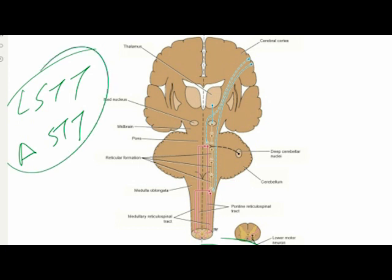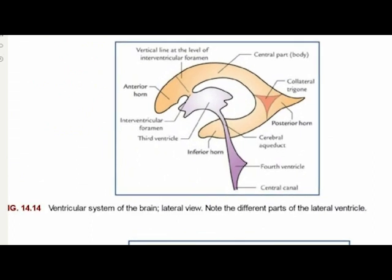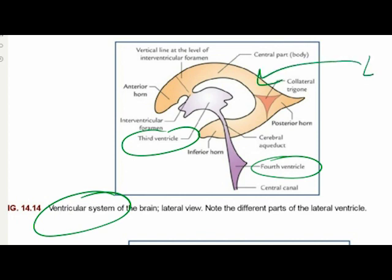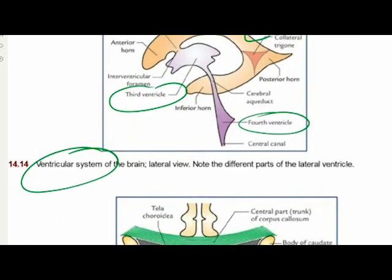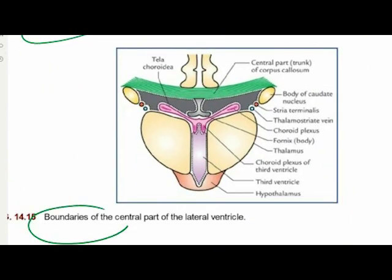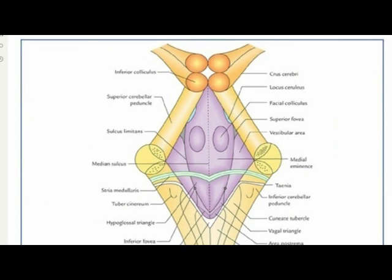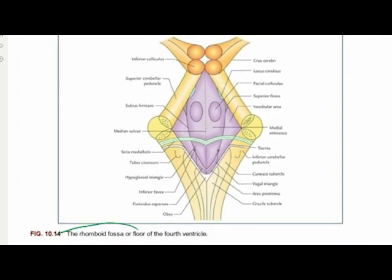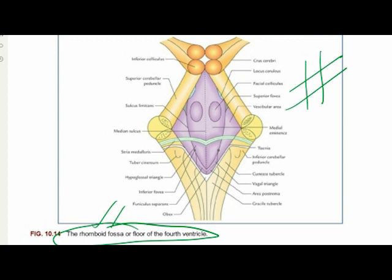The next important topic is the ventricular system of the brain. A general diagram shows all ventricles: the third, fourth, and lateral ventricles. The lateral ventricle is most commonly asked, and you must know two diagrams: the boundaries of the central part of the lateral ventricle, and the floor of the fourth ventricle, also known as the rhomboid fossa. The rhomboid fossa is a must-do diagram — even if you skip the rest of the ventricular system, be thoroughly prepared with this one.